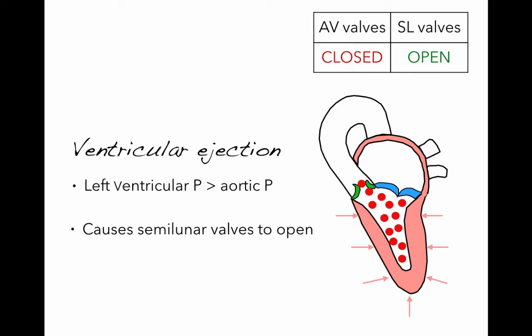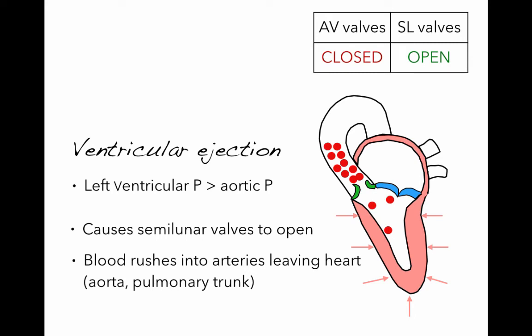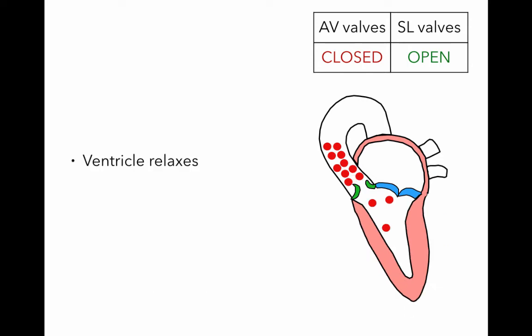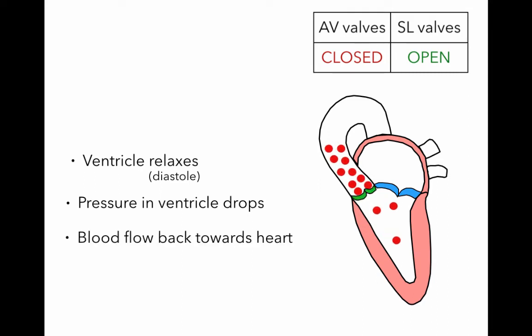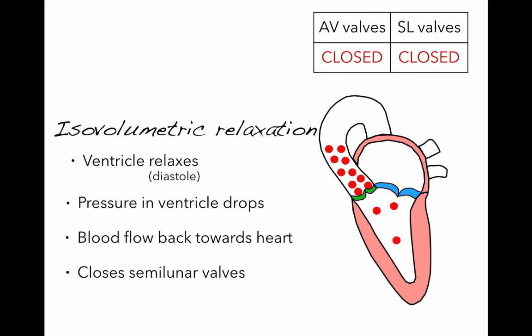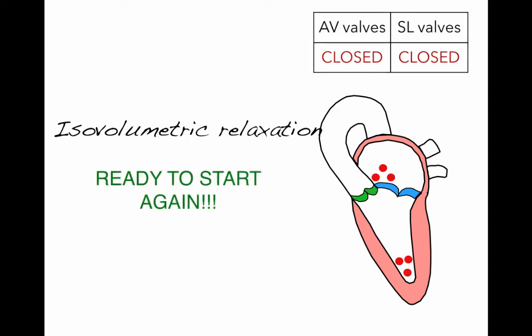The blood is being ejected from the ventricle to the large arteries — out through the aorta on the left side, and to the pulmonary trunk on the right. As the ventricles relax into diastole, the pressure in the ventricles drops, while the pressure in the aorta is higher. Blood flows back toward the heart from high to low pressure, gets caught in the cusps of the semilunar valves, and they shut. We are now back to the beginning — iso-volumetric relaxation — where the ventricles are relaxed and the same volume of blood remains in the ventricle because all valves are closed.